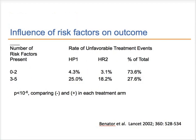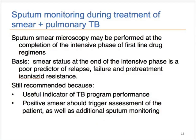No one of these features is predictive in and of itself as an indication to prolong therapy for more than six months. But when several of these features are present, physicians should carefully evaluate the patient and consider whether prolonging therapy makes sense. Sputum smear microscopy should always be performed at the beginning of therapy and in most cases at the end of the intensive phase as well. A positive smear at the end of two months should trigger a careful clinical assessment and additional sputum monitoring to evaluate response to therapy and a possible need for prolonging treatment.